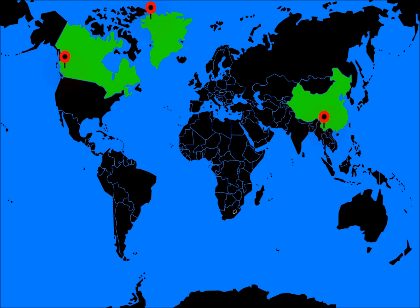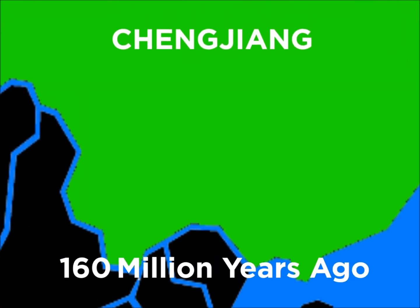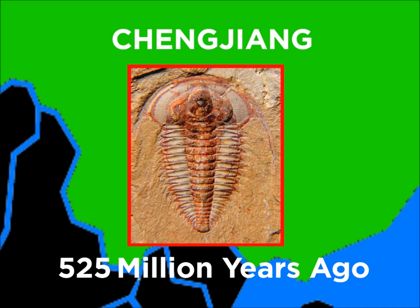The majority of our knowledge about the Cambrian flora and fauna comes from three major fossil preservation sites known as Fossil Lagerstätten. The earliest being the Chengjiang fossil site in the Yunnan province of China, where a variety of hard and soft body tissues are exceptionally well preserved, dating back to 525 million years ago in the early Cambrian.